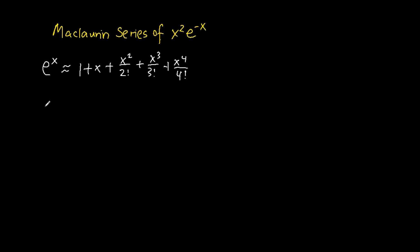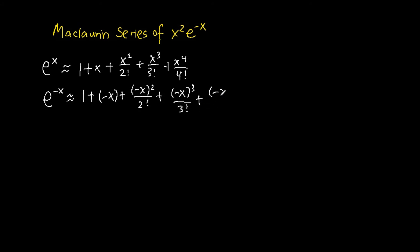From the Maclaurin series of e to the power of x, we can find the Maclaurin series of e to the power of negative x by substituting x as negative x. So we get 1 plus negative x plus negative x squared over 2 factorial plus negative x to the power of 3 over 3 factorial plus negative x to the power of 4 over 4 factorial. This simplifies to be 1 minus x plus x squared over 2 factorial minus x cubed over 3 factorial plus x to the power of 4 over 4 factorial.